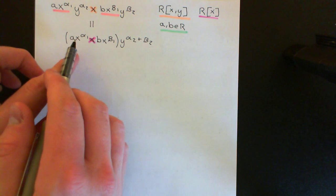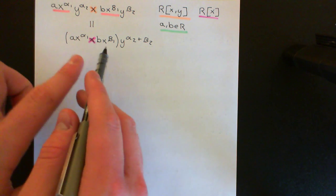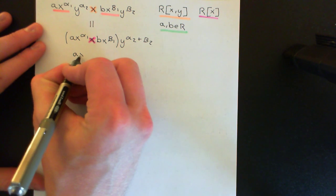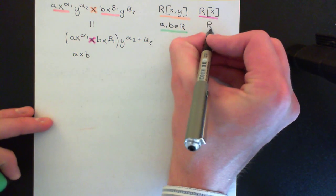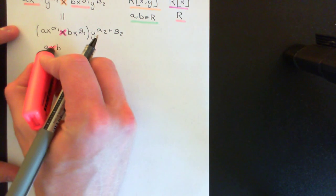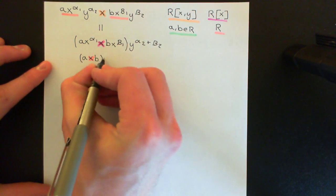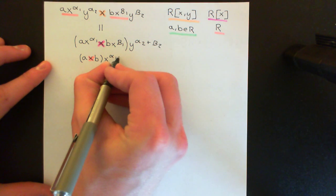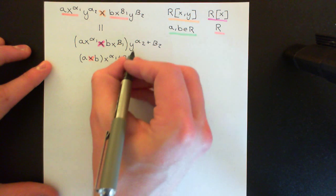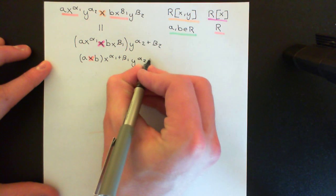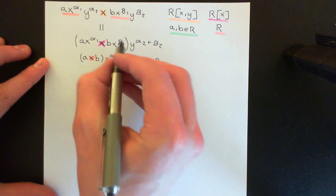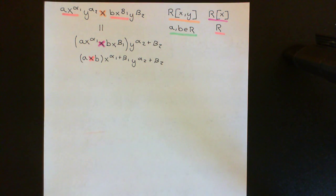We multiply the two coefficients of these together and then add the powers. So this becomes A times B — multiplied together finally in the ring R — in front of x^(α₁+β₁) and then y^(α₂+β₂). This is the monomial you end up with when you multiply two monomials together. This allows us to understand multiplication of any two polynomials in the ring of polynomials in x and y.